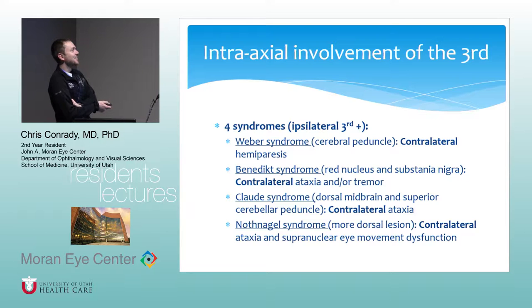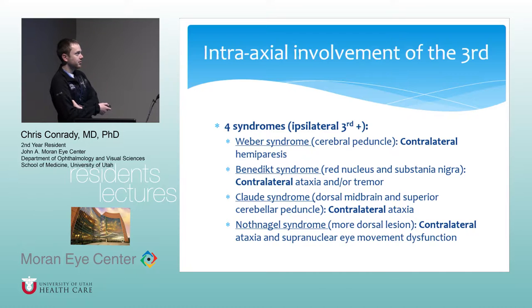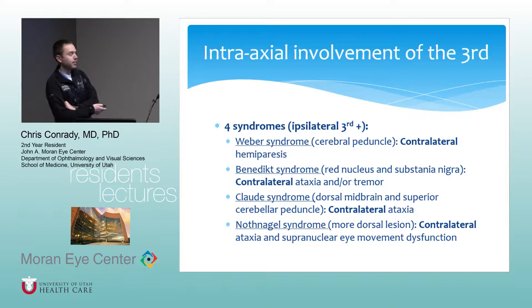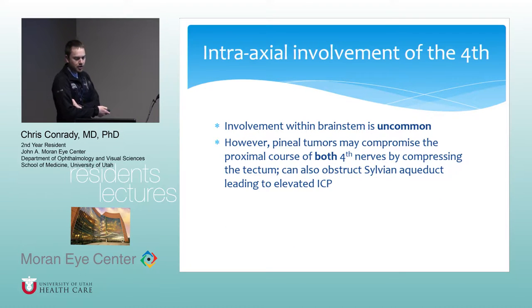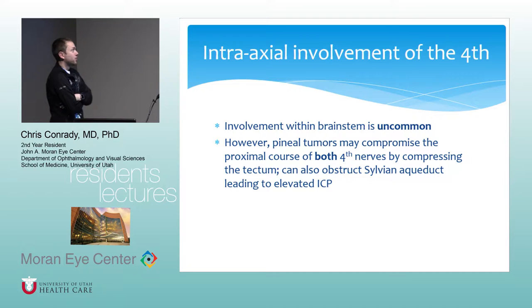These syndromes all arise from different areas of the brainstem. I've put in parentheses the spot where pathology is most likely to occur — I don't know that that's tested as much, but it's good to know. That'll be in the PowerPoint slides if you want to see it later. Moving to intra-axial involvement of the fourth nerve.